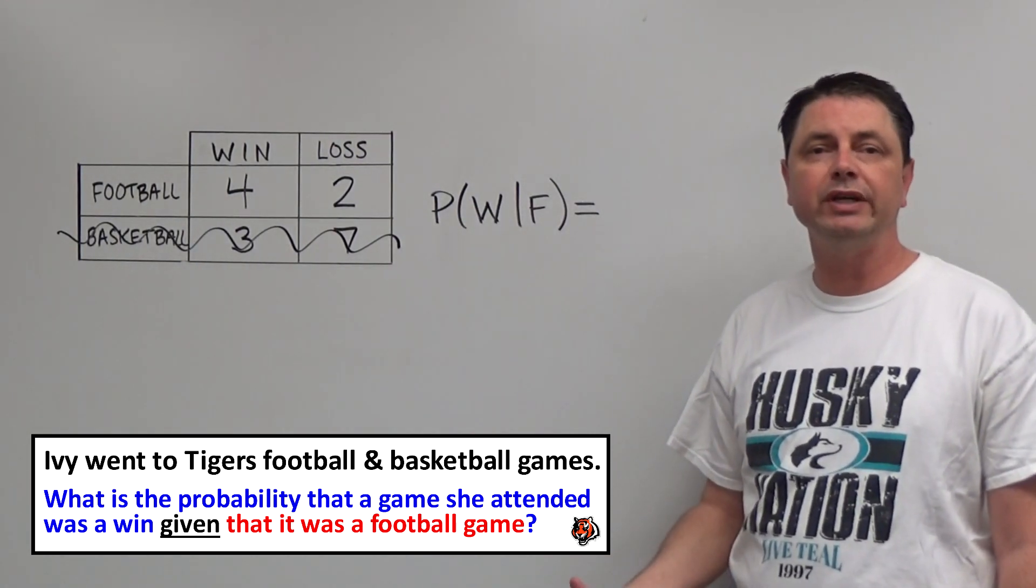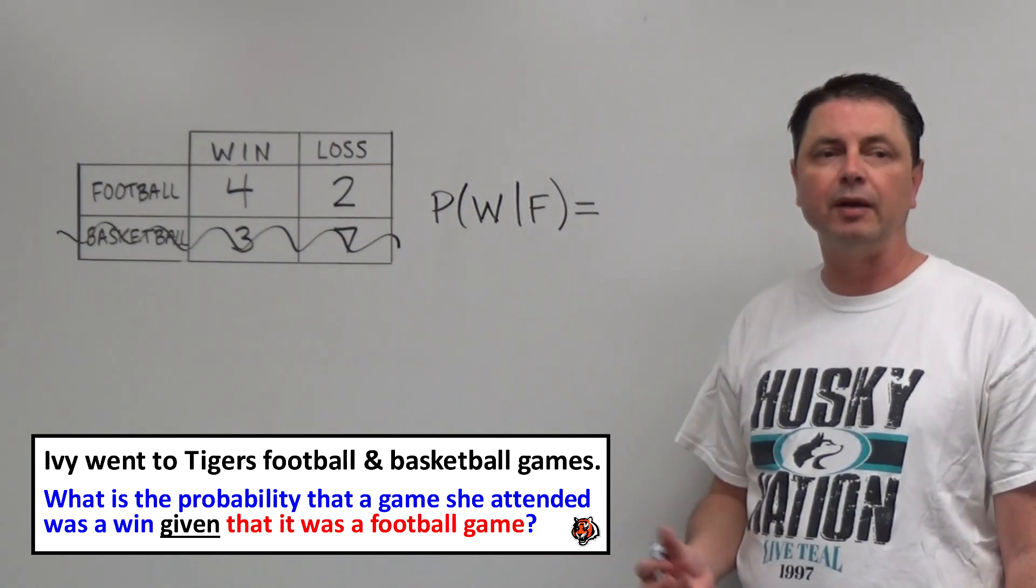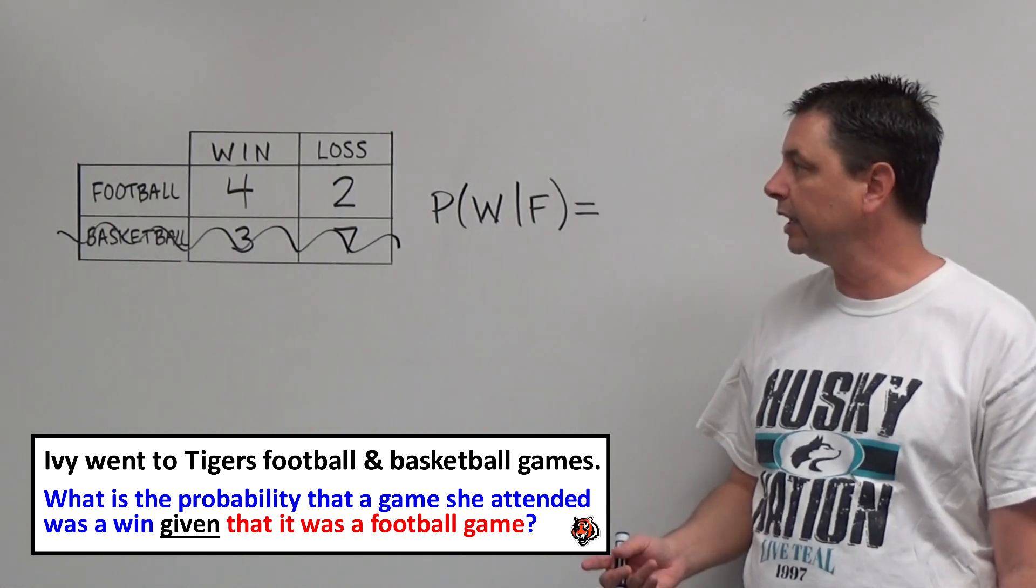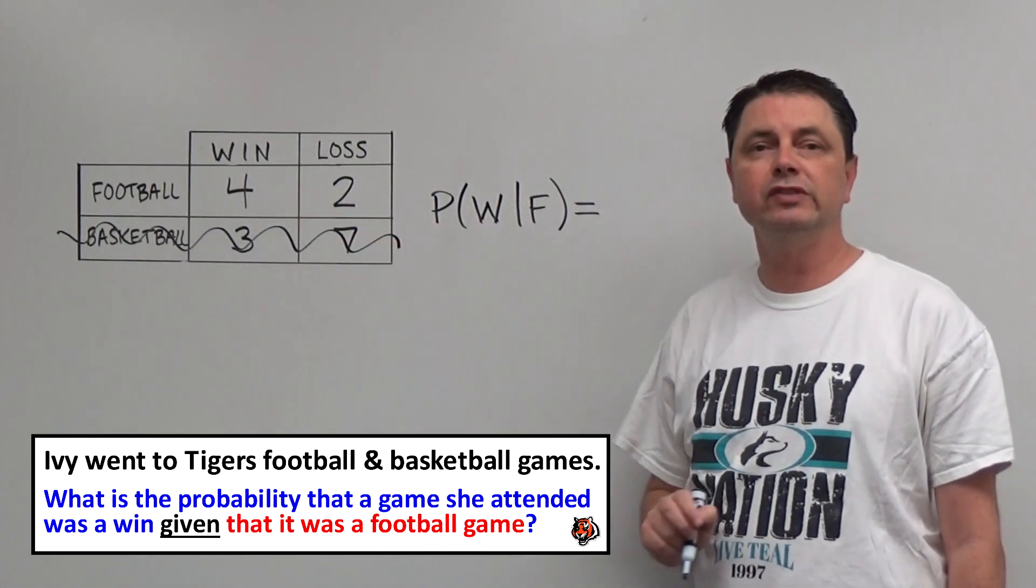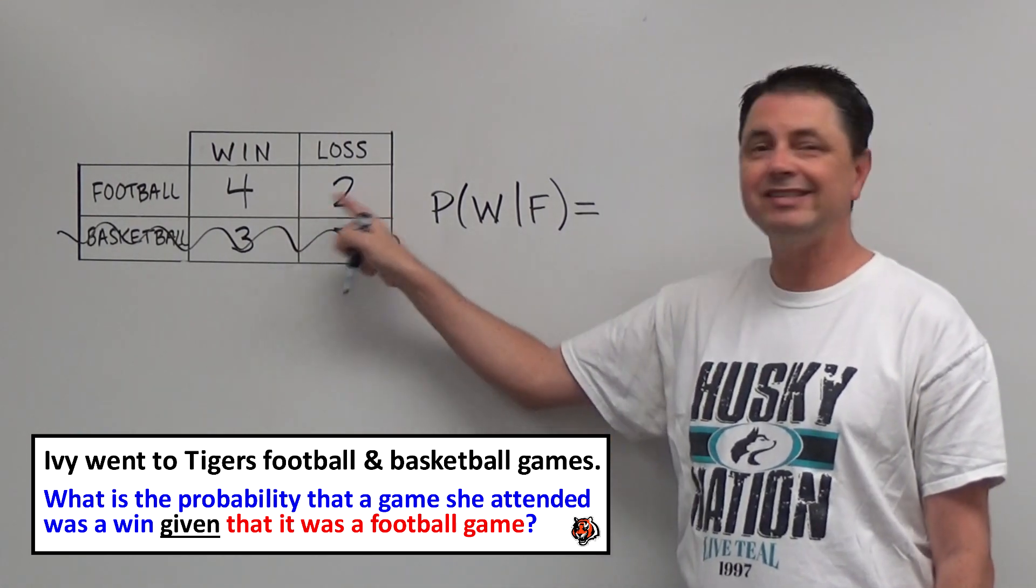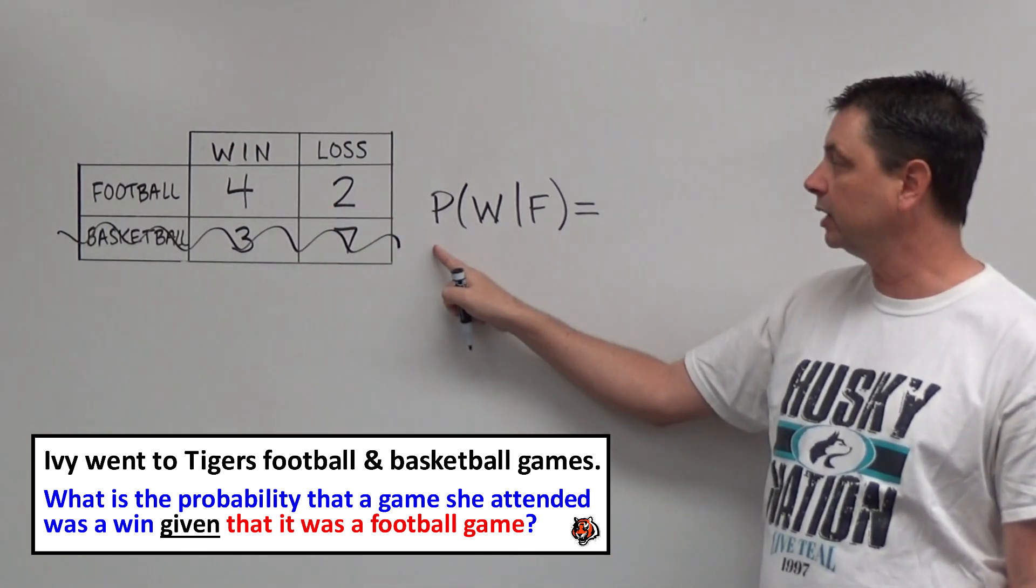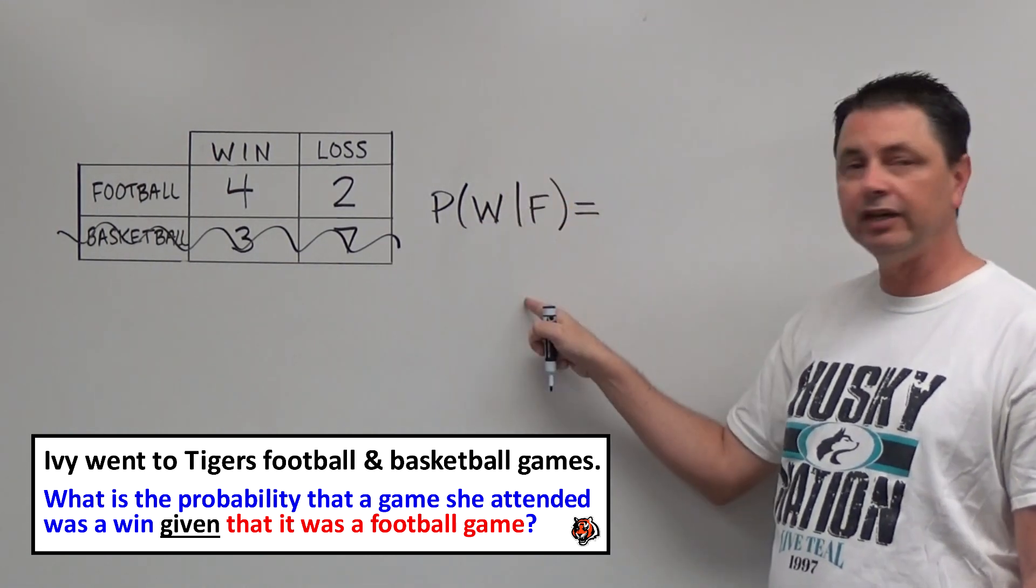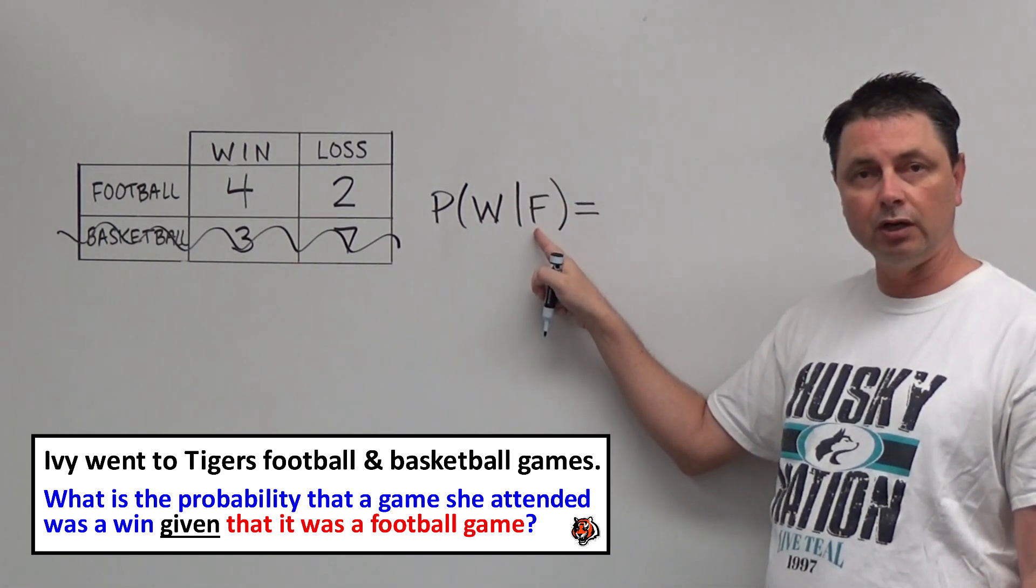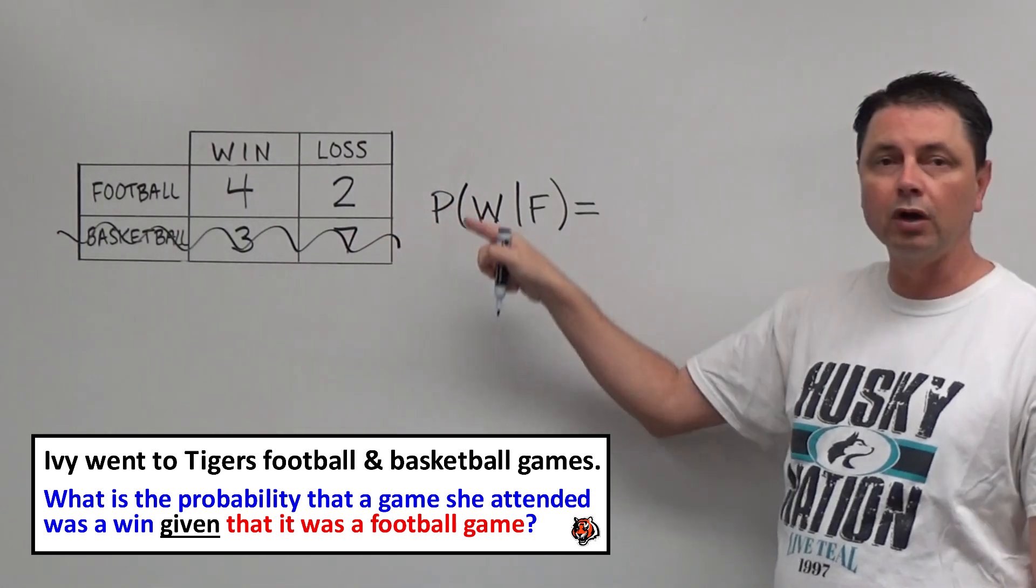Now if we re-read the problem, what is the probability the game that she attended was a win? Well, four of those games were wins. The total was six. So the probability, the way that we read this, the probability of a win given that it was football is going to be four out of six.